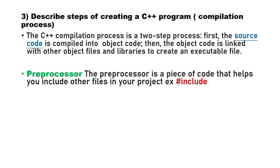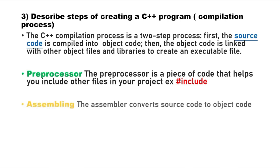If you want to use C++, then you can use a hashtag include. If you want to use a hashtag include, then you can use a pre-process step. The assemblers convert source code to object code.